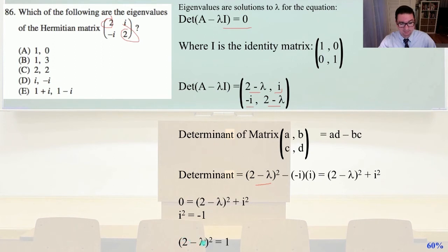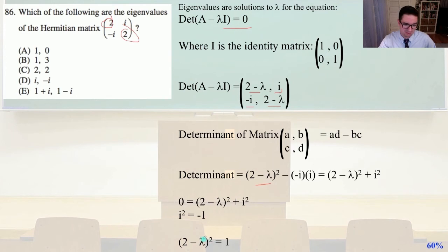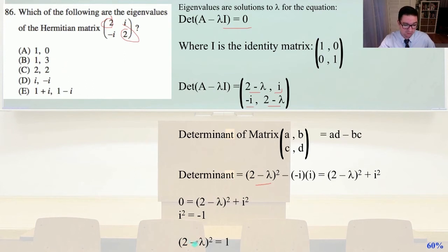Plugging in our values: lambda equals 1 works because 2 minus 1 is 1, and 1 squared equals 1. Lambda equals 0 does not work; 2 squared does not equal 1. Plugging in lambda equals 3: 2 minus 3 is minus 1, and (minus 1) times (minus 1) is 1, so 1 equals 1. Your answer is B: 1 and 3.